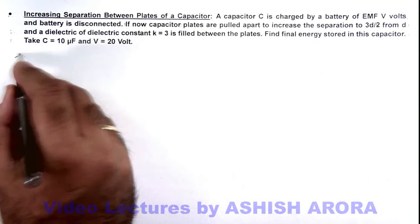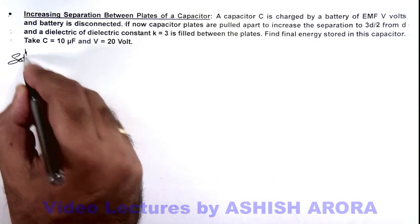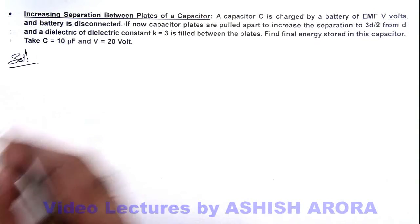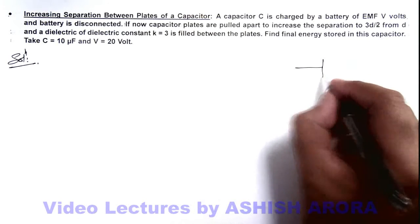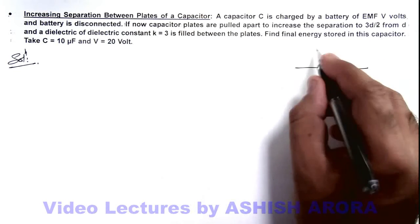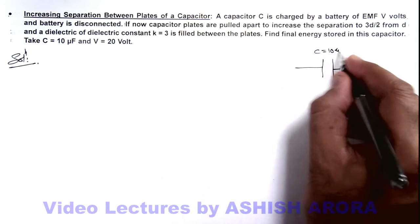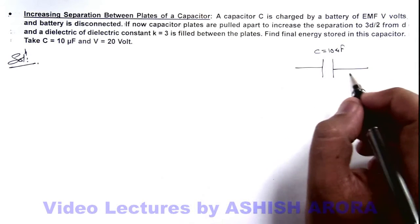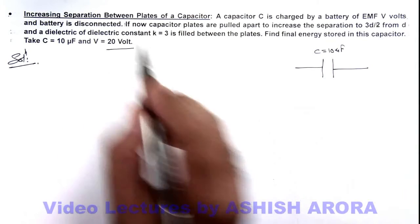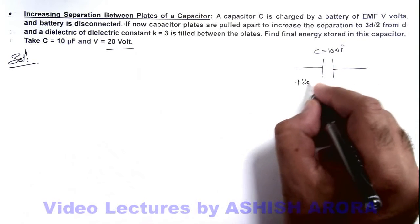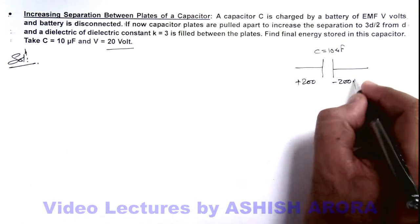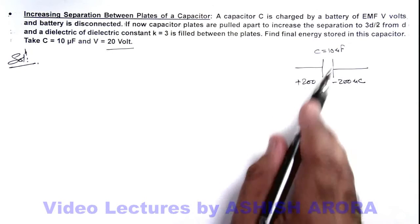The initial values of C and V are given to us. So in this situation we can see we are given a capacitor of capacitance 10 microfarad, and it is charged to a potential difference of 20 volts. So charge on it will be plus 200 and minus 200 microcoulomb because the charge on capacitor is CV.